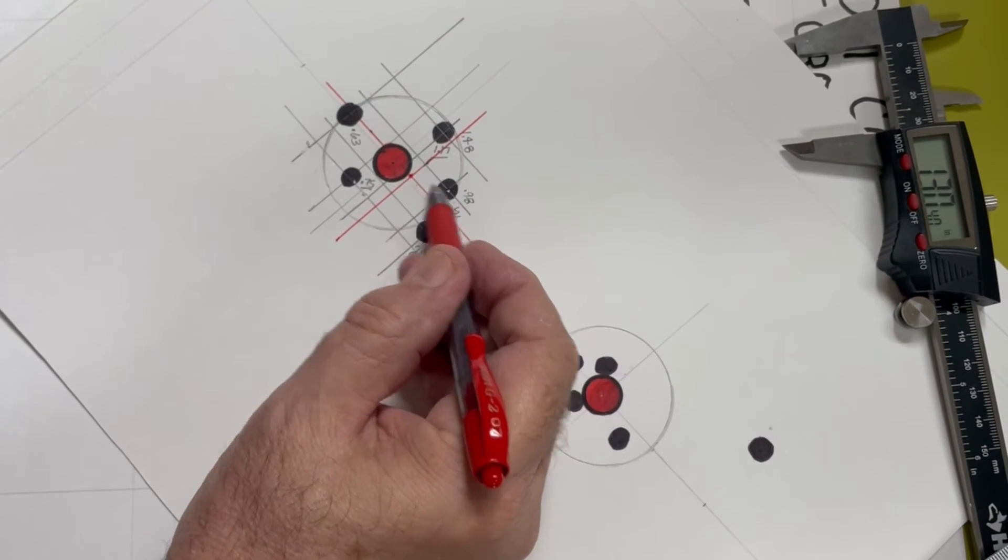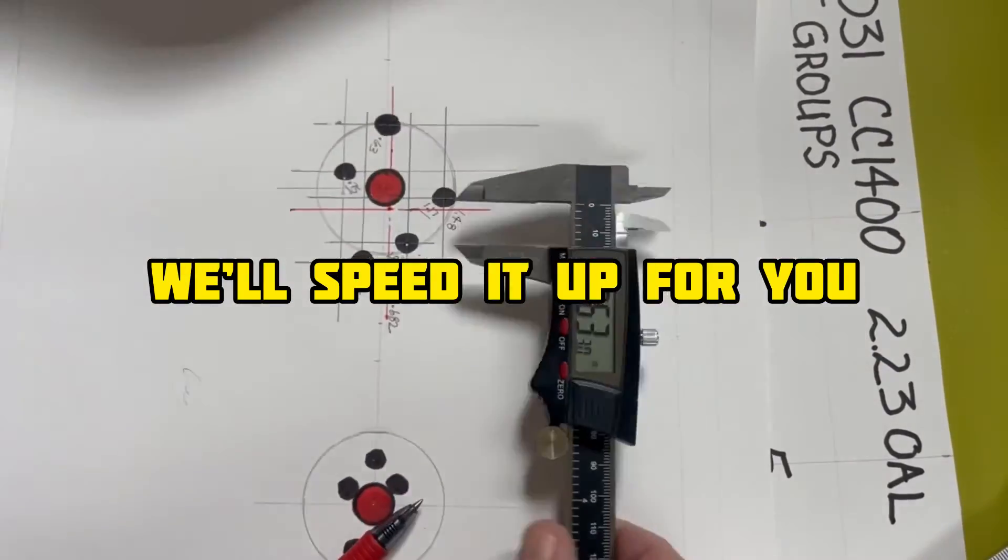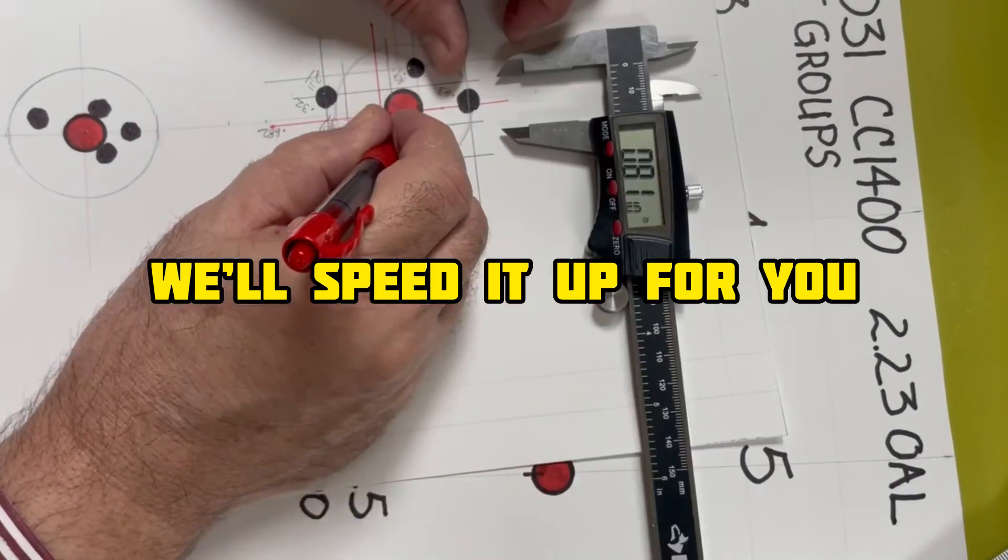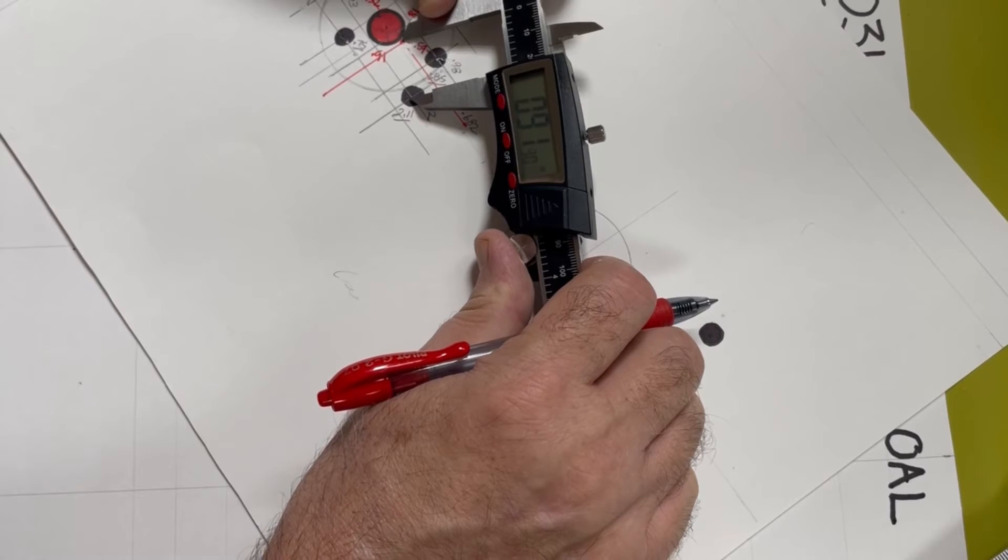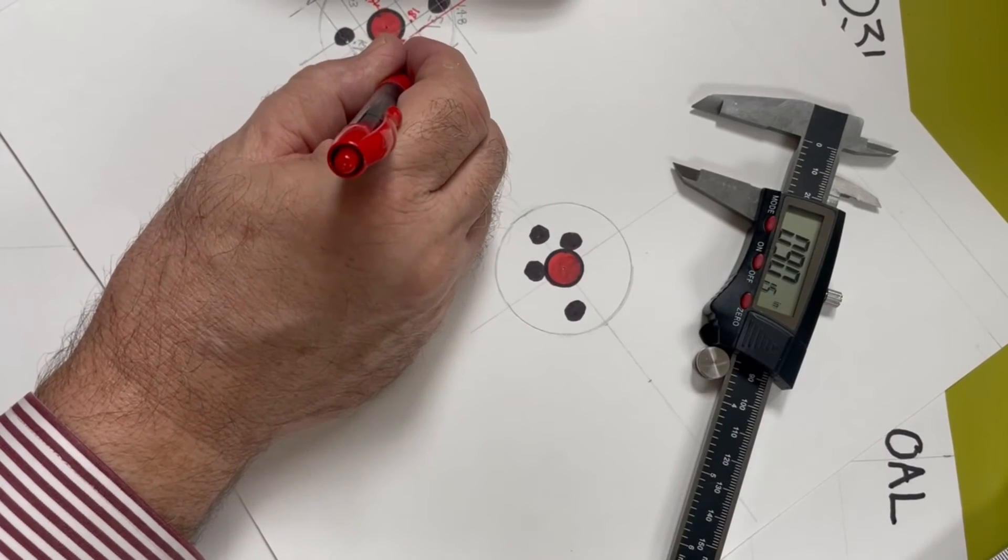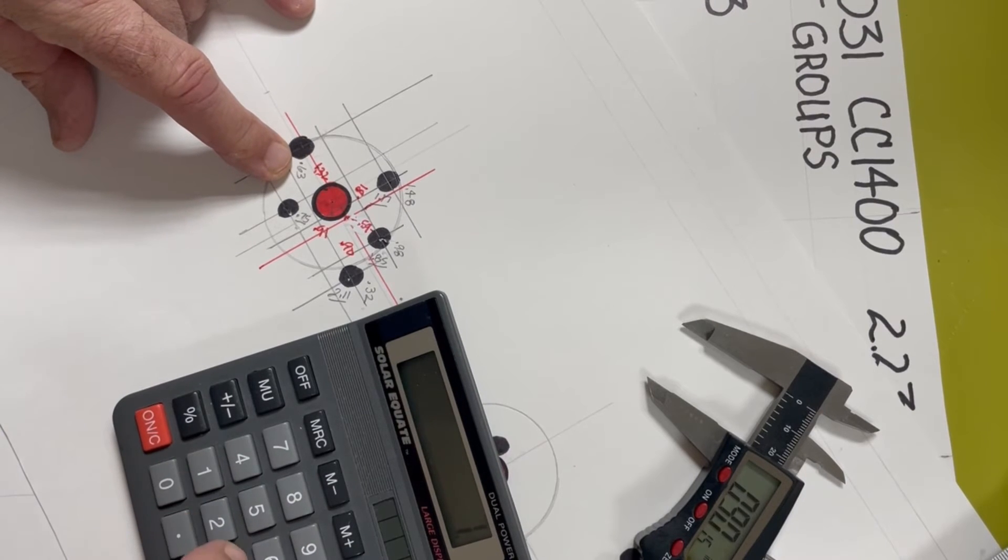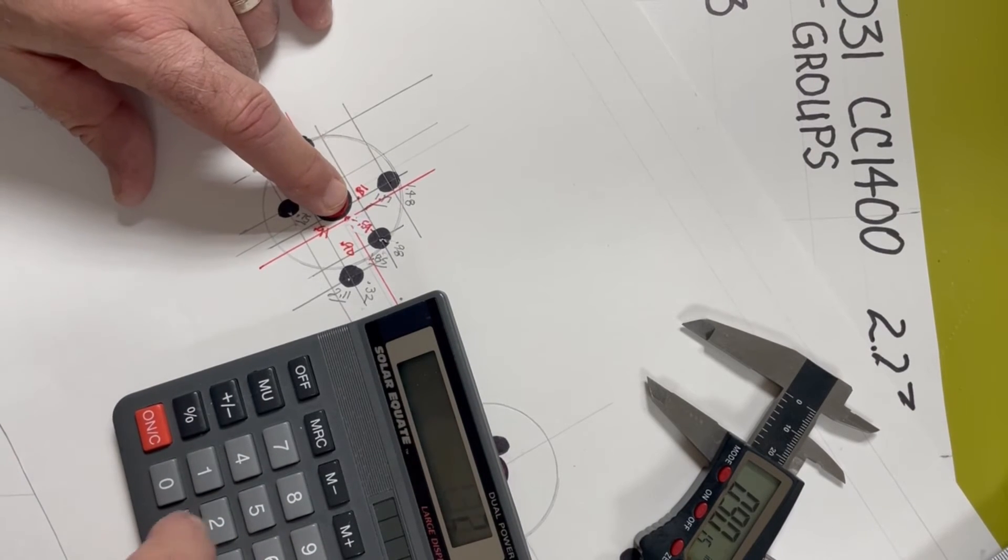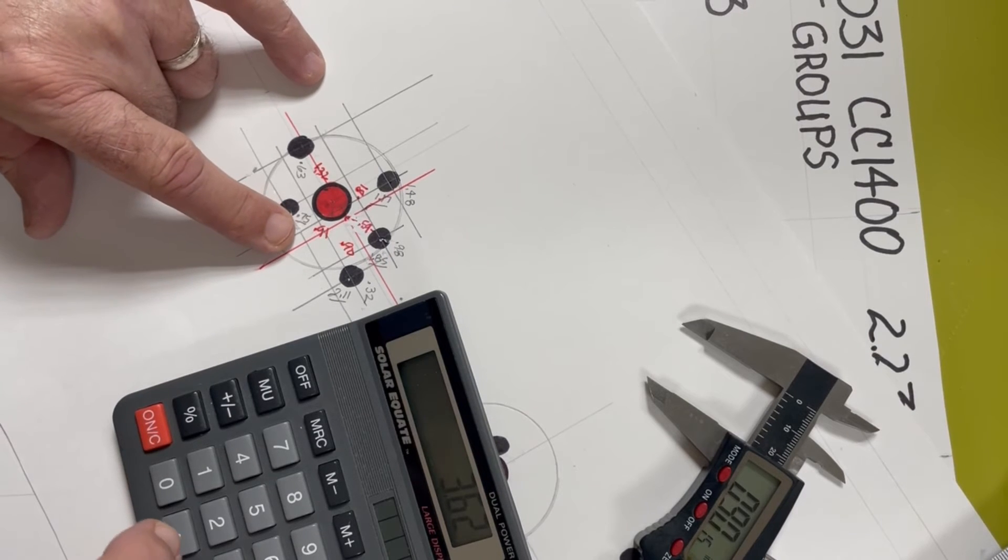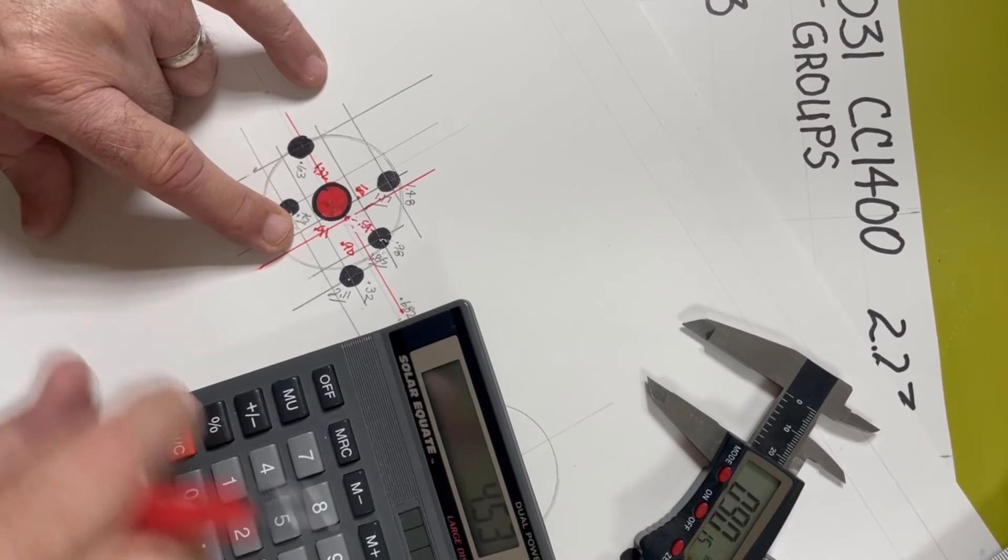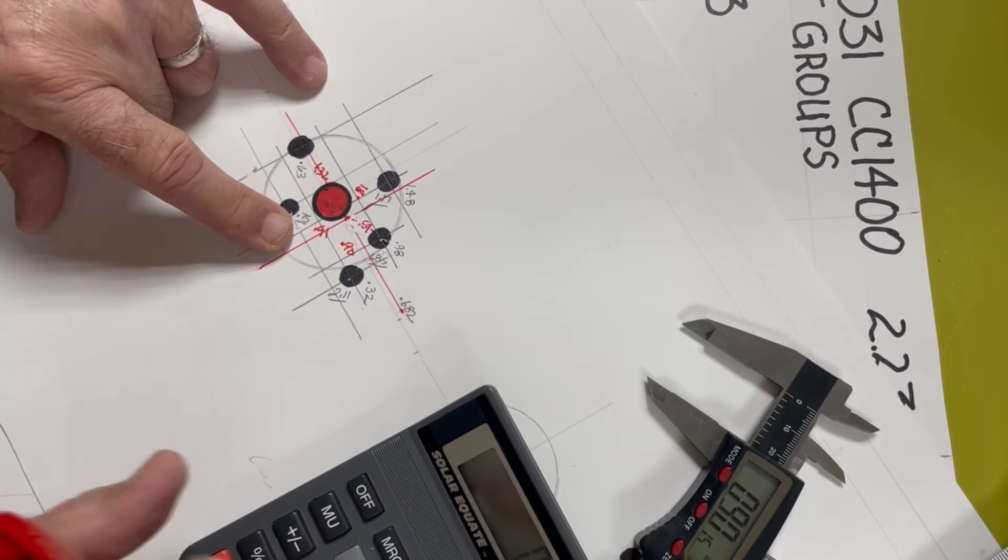And now you're going to measure the radius to each of these holes, and you're going to average those. Lastly, 0.90. So, we're going to average the numbers in red. 1.32 plus 0.81 plus 0.59 plus 0.9 plus 0.91 equals 4.53 divided by 5 equals 0.91.